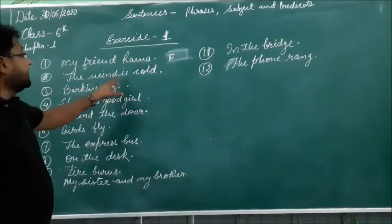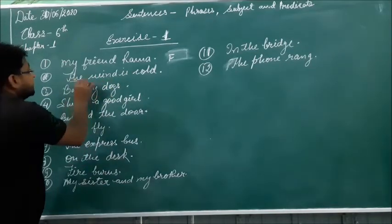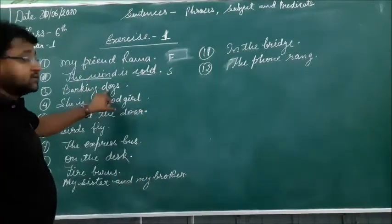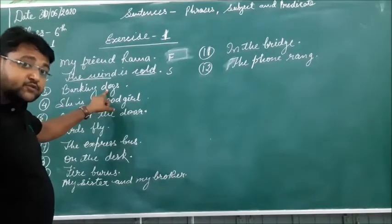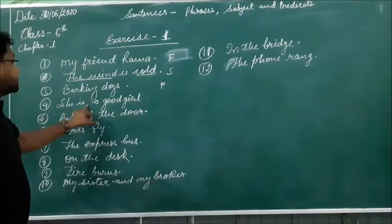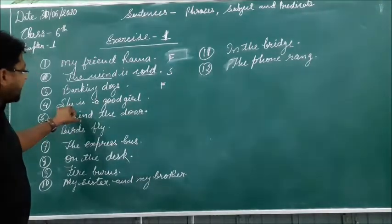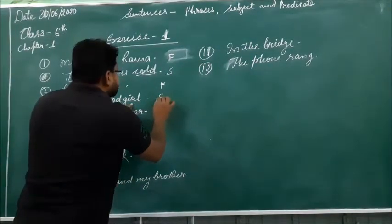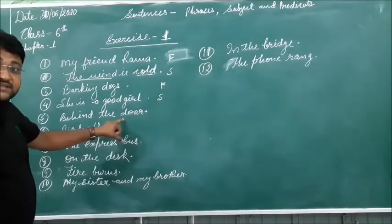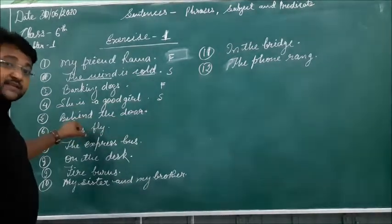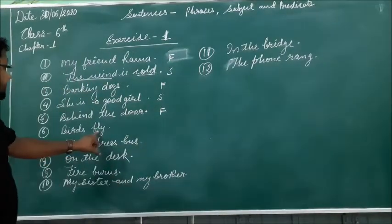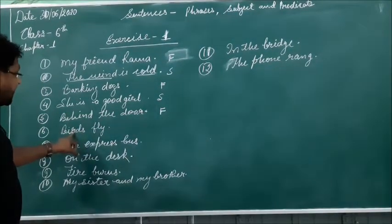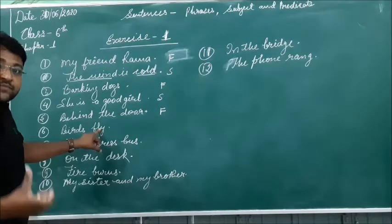In the second sentence, 'The wind is cold' — it has a subject of its own and a predicate of its own, so that is a sentence. 'Barking dogs' — it has no subject and predicate of its own, that is why it is a phrase. 'She is a good girl' — 'she' is the subject, 'is' is the verb, 'a good girl' is the predicate, so this is a sentence. 'Birds fly' — it has its own subject and verb, so it is a sentence.